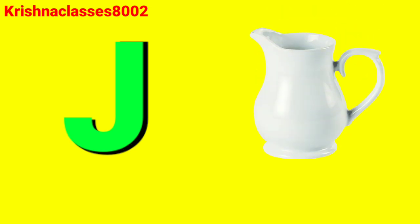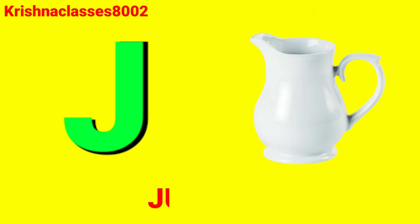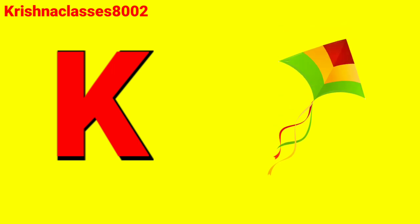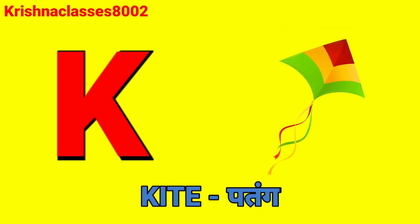J for jug. Jug means jug. K for kite. Kite means patan.